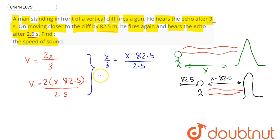This gives us 2.5x = 3x - 247.5, so 0.5x = 247.5, which means x equals 495 meters.